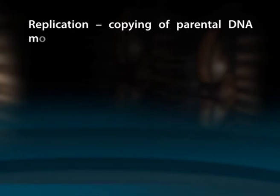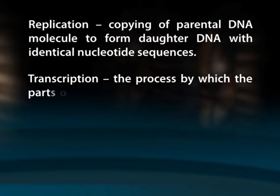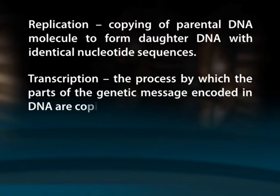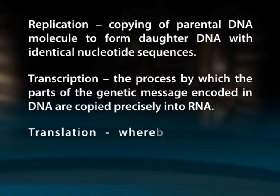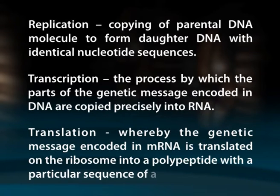Scientists identified three processes that facilitate the flow of information at the genetic level. The first is replication — the copying of a parental DNA molecule to form daughter DNA with identical nucleotide sequences. The second is transcription — the process by which the genetic message encoded in DNA is copied precisely into RNA. The third is translation — whereby the genetic message encoded in mRNA is translated on the ribosome into a polypeptide with a particular sequence of amino acids.